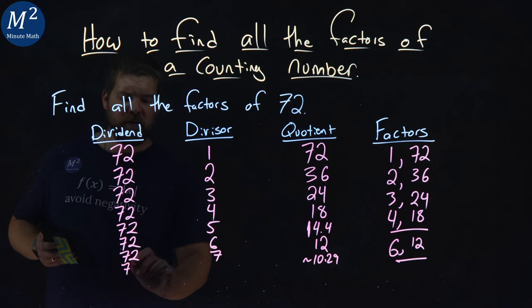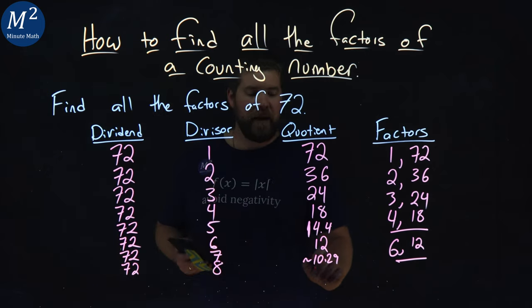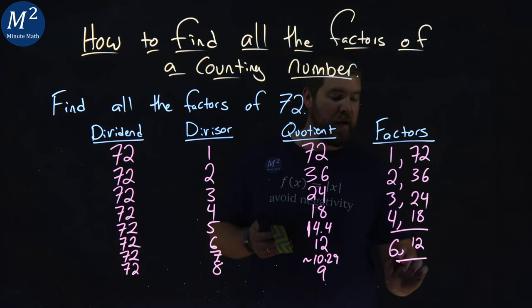And this is going to be the last one we check. 72 and 8. 72 divided by 8 is 9. So 8 and 9 are factors.